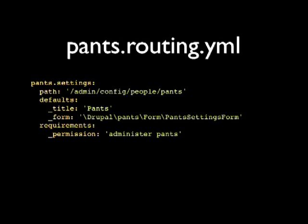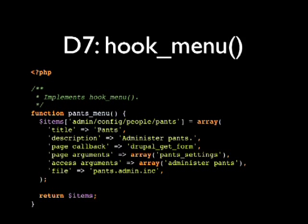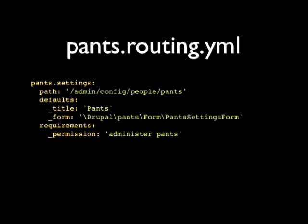This is the pants routing.yaml, the part that takes over the routing aspect of hook_menu from Drupal 7. There's the machine name pants.settings, the path — the same thing you used to put as the key in the array of menu items — and then two sections: defaults and requirements. Instead of access arguments 'administer pants', we have permission 'administer pants' as a requirement. The new thing is the form class: Drupal\pants\Form\PantsSettingsForm — that's PSR-0 and PHP 5.3 namespaces.